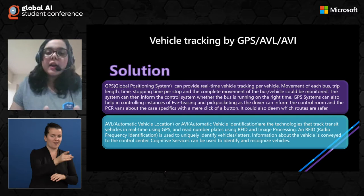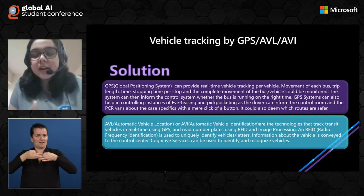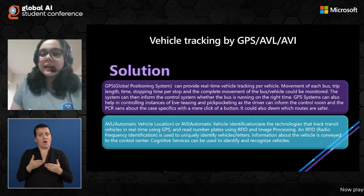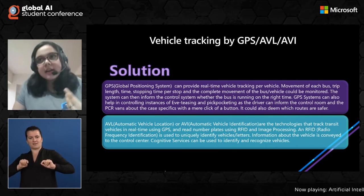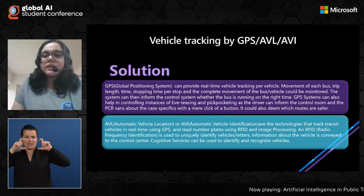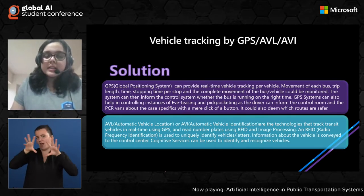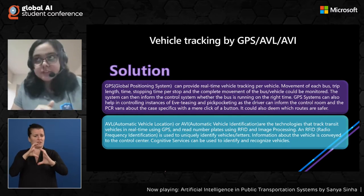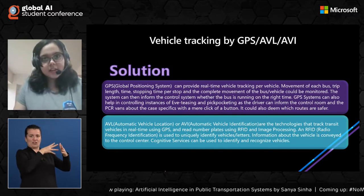AVL (Automatic Vehicle Location) and AVI (Automatic Vehicle Identification) are technologies that track transit vehicles in real time using GPS. They can also read number plates using techniques like RFID (Radio Frequency Identification) and image processing to identify vehicles and the letters on number plates. Information about the vehicle is conveyed to the control center and to passengers as well. We can use facilities like Azure Cognitive Services to identify and recognize vehicles.